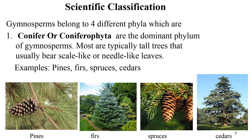There are four kinds of gymnosperms. By far the largest group are conifers, which are the dominant phylum of gymnosperms. Most are tall trees that usually bear scale leaves and needle-like leaves. Conifers include evergreen trees such as pine, spruces, firs, and cedars.